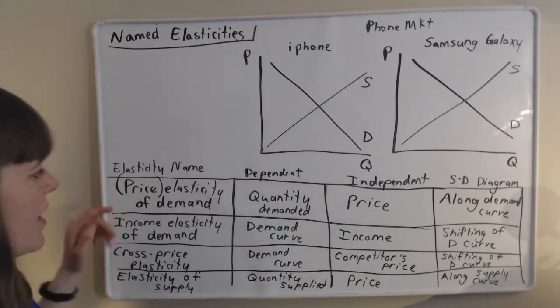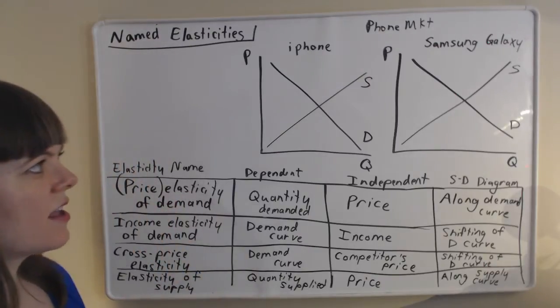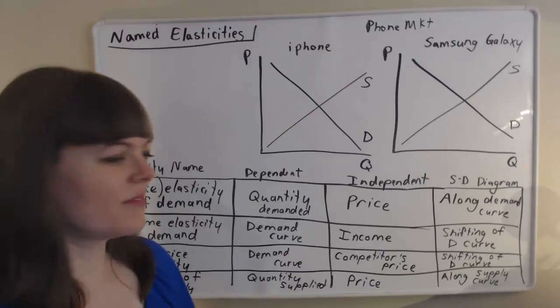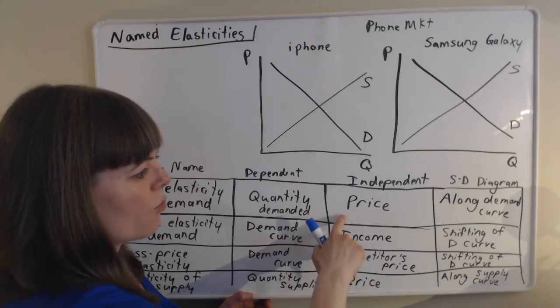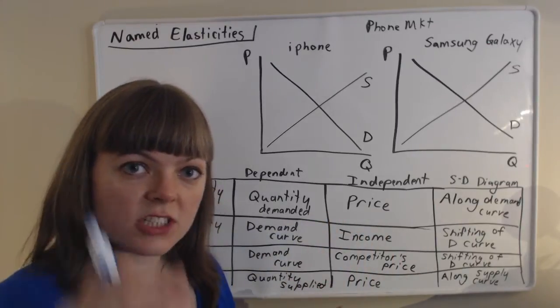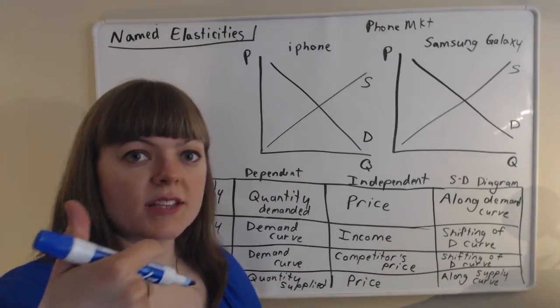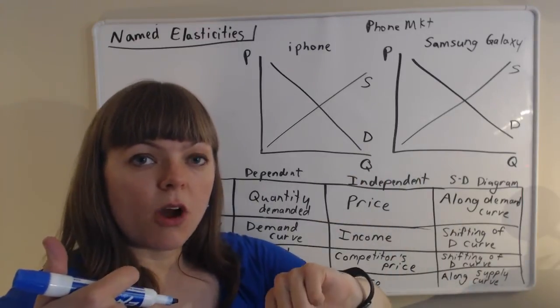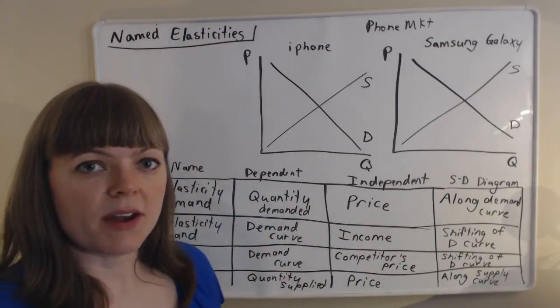The most common is the elasticity of demand or price elasticity of demand. And that's the one you hear about the most among economists probably. And this one measures a situation where the price is the independent variable. So you change the price and you want to know, if you increase the price, how many fewer products will people demand. So the quantity demanded is the dependent variable.